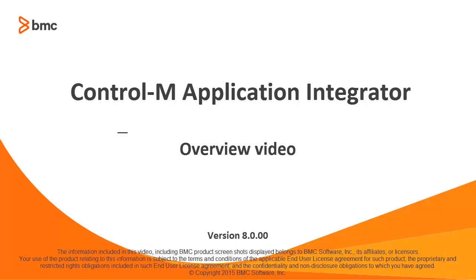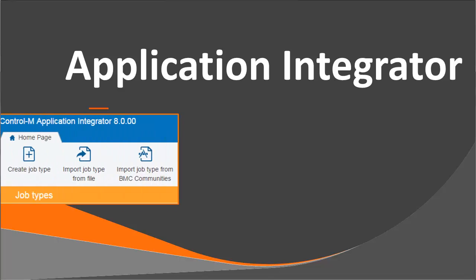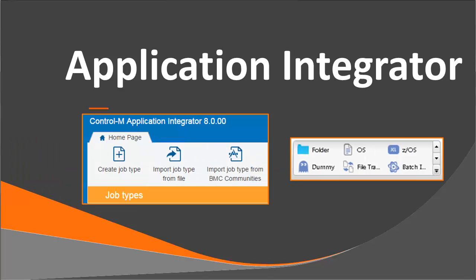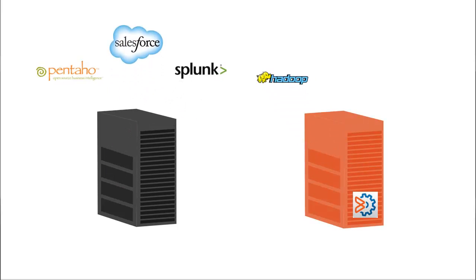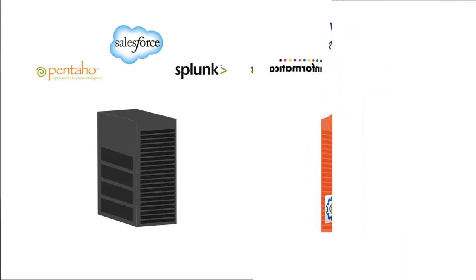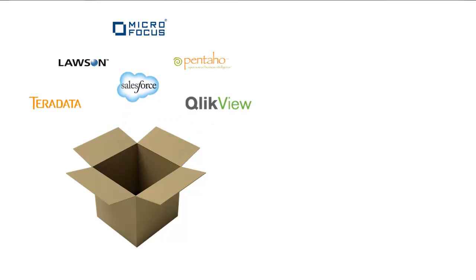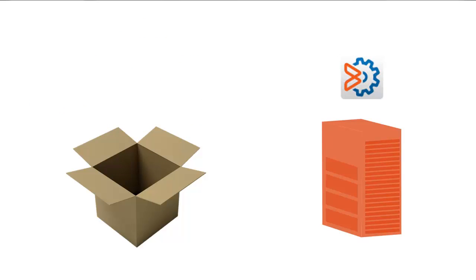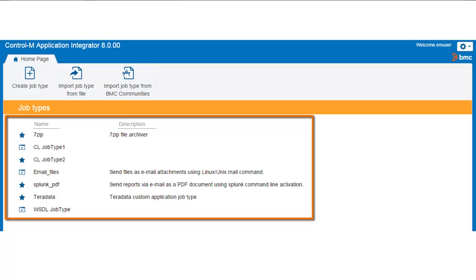Welcome to BMC's Control-M Application Integrator overview video. In this video, you will learn about Control-M's Application Integrator and how to use it to create job types for Control-M. Usually, companies use various applications in their IT environment. Control-M provides native integration of many of those applications. But what if one of the applications you want to use with Control-M is not one of the out-of-the-box integrations provided by BMC? You can use the Application Integrator to create custom-designed job types to manage workflows from any application.